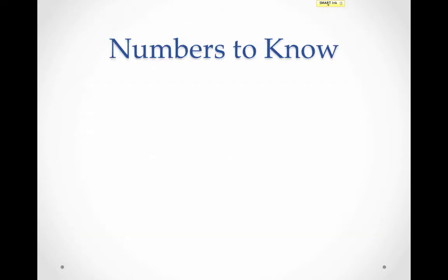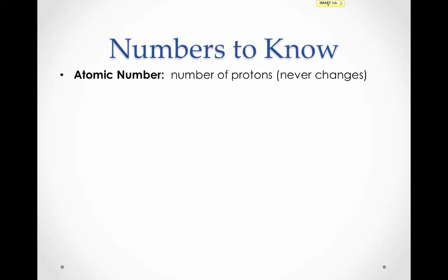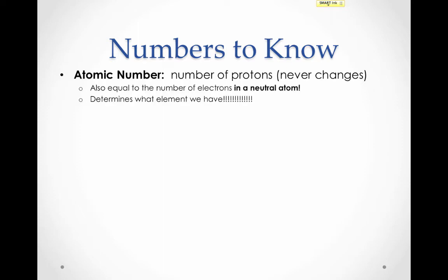Let's start by defining each of these numbers, then we'll look at where to find them on the periodic table. The atomic number is defined as the number of protons in an atom. The atomic number never changes for a given element — any atom with eight protons will always be an oxygen atom. It essentially determines what element we have. You cannot change the number of protons in an atom without changing the element. We don't have the means in chemistry to change the number of protons in an atom — that's not a chemical process.